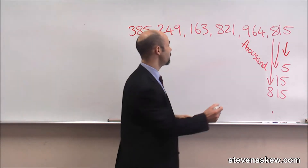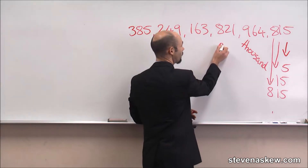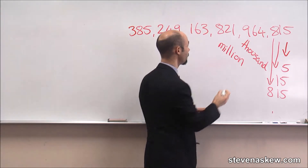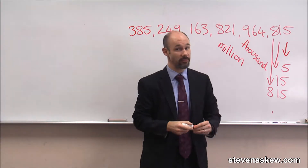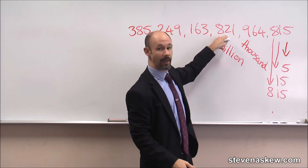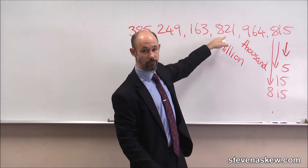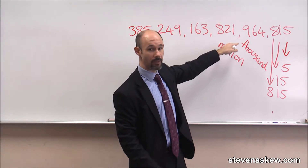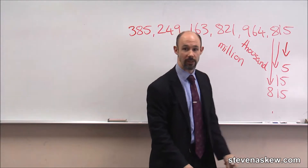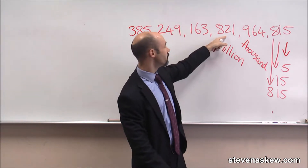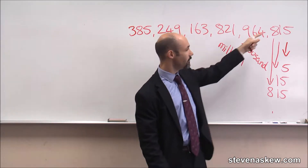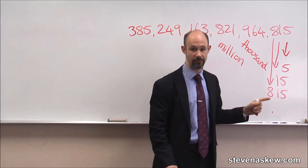The next group of three — these are millions. Same thing: unit, ten, hundred — eight hundred and twenty-one. What you have to do now is add the words. Eight hundred and twenty-one million, nine hundred and sixty-four thousand, eight hundred and fifteen.